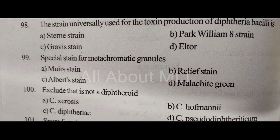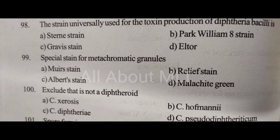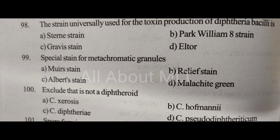Exclude that which is not a diphtheroid. Option A: C. cirrhosis. Option B: C. hoffmannii. Option C: C. diphtheria. Option D: C. pseudodiphtheriticum. Answer is Option C: C. diphtheria.